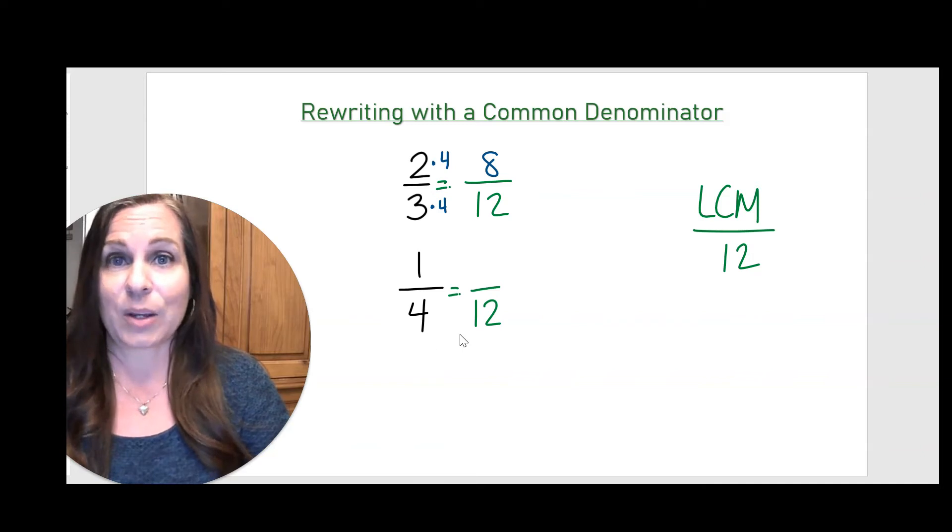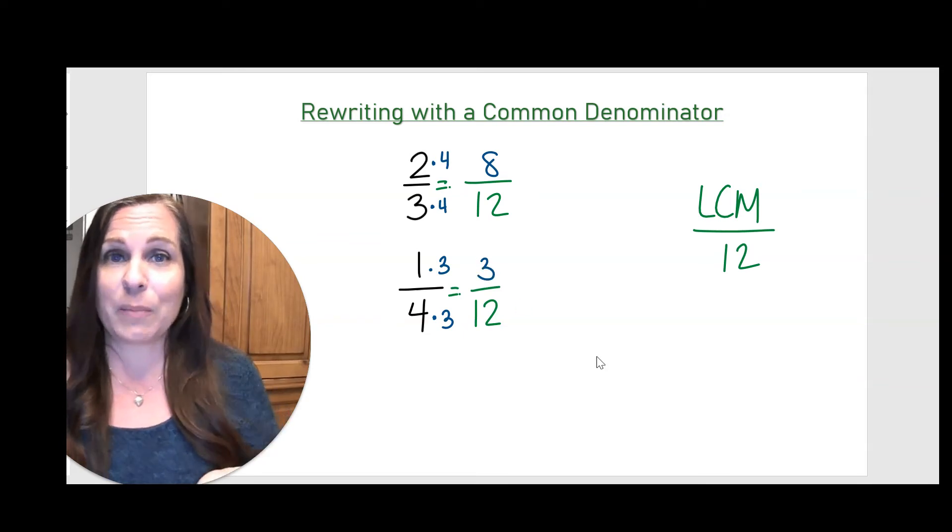Let's look at one-fourth. Four times what is 12? Three. So I have to multiply by three on top as well. One times three is three. And now I've rewritten both of my fractions with the common denominator 12.